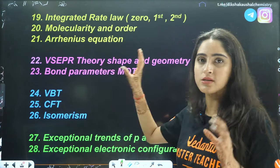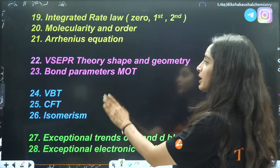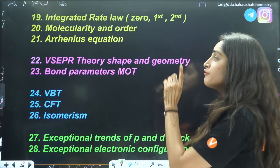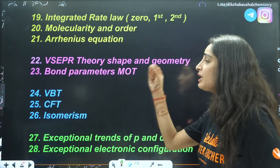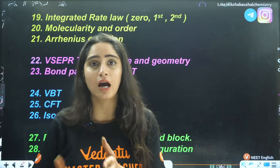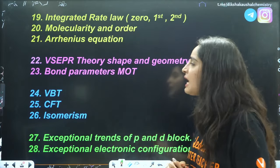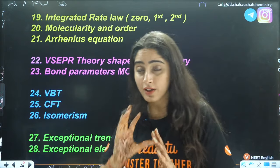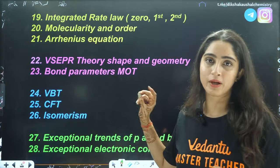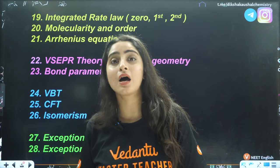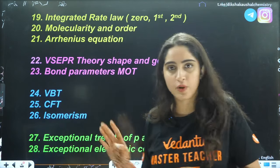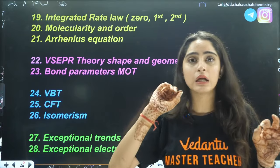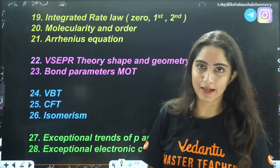Now moving to inorganic chemistry — we have VSEPR theory. From here, shapes and geometries based on hybridization are tested. Then bond order and bond parameters: mostly from molecular orbital theory (MOT), including the magnetic nature of molecules — whether they are paramagnetic or diamagnetic.